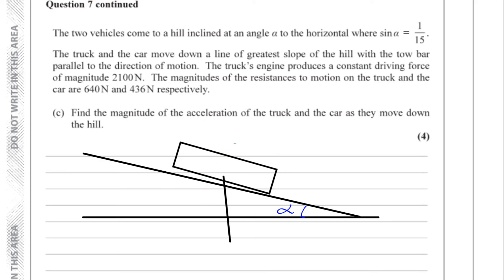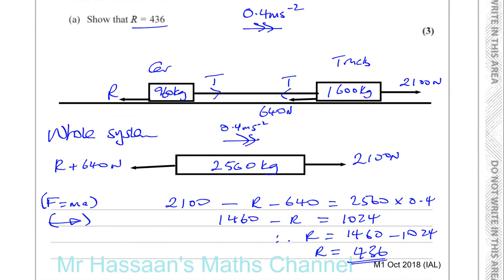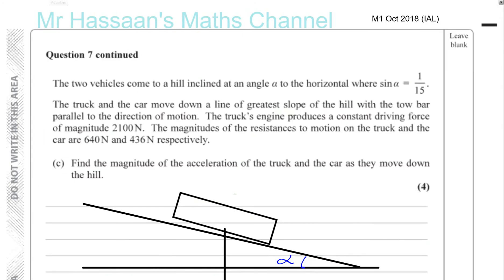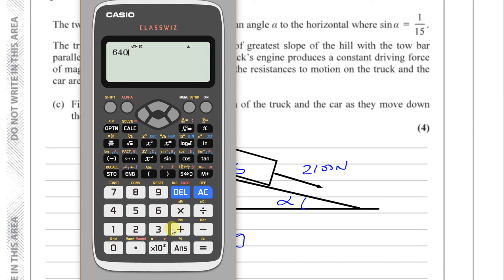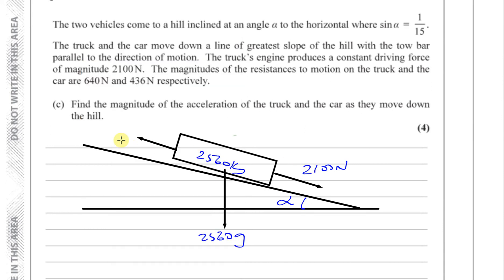Going down the hill, the component of the weight also comes into play. The total mass is 2,560 kilograms. The driving force is 2,100 newtons. Down the slope there's the component mg sine alpha, which is 2,560g sine alpha. The total resistance to motion is 640 plus 436, which equals 1,076 newtons acting up the slope.